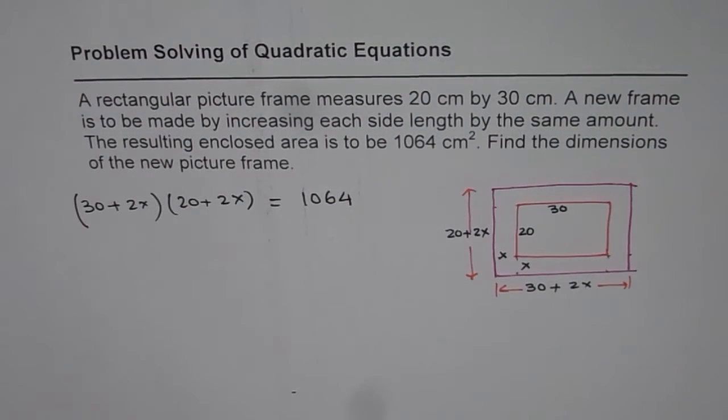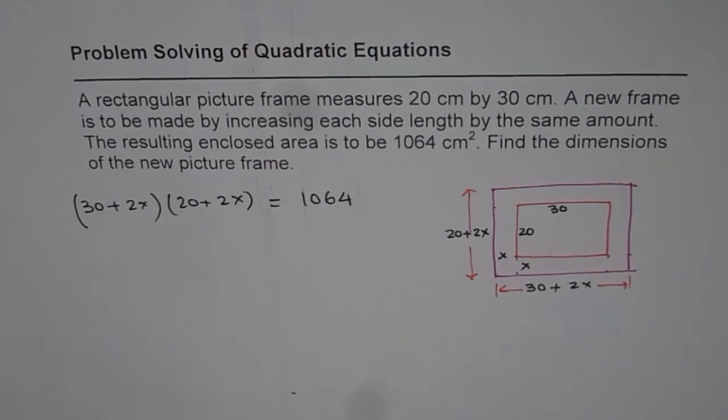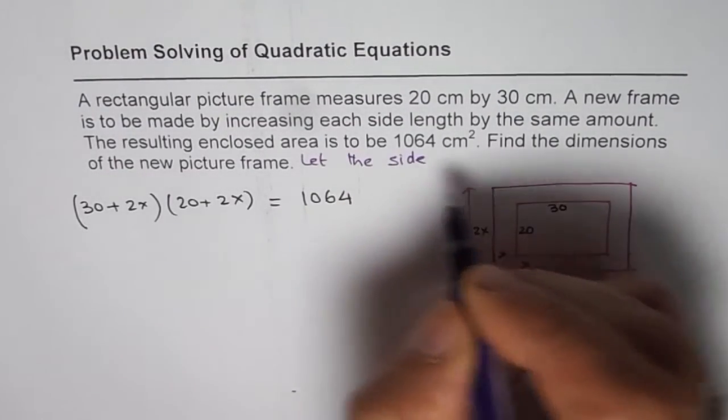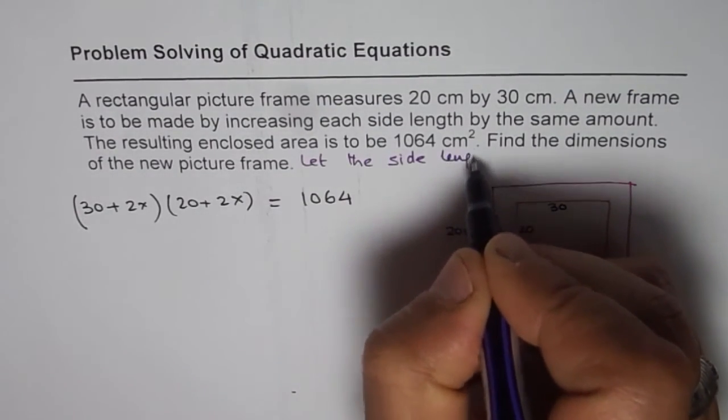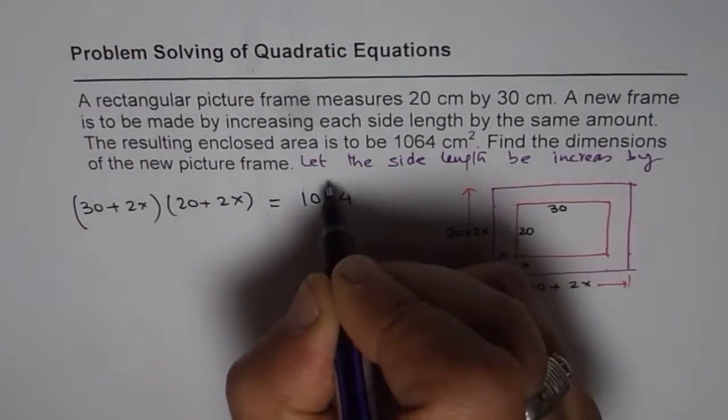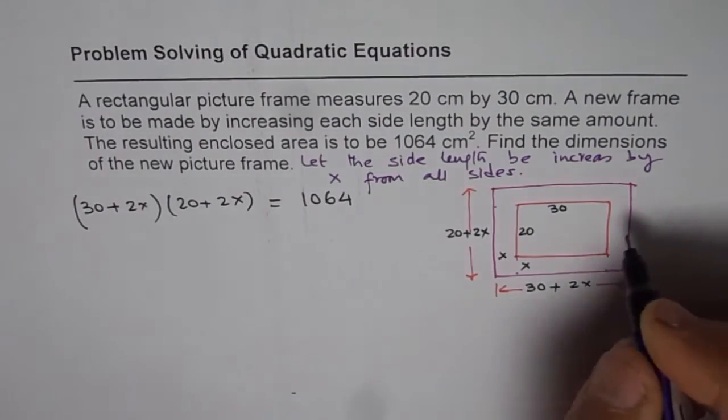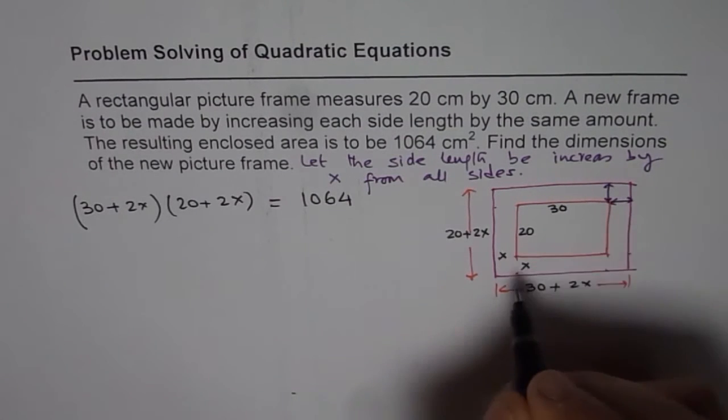So that is the equation for you. Now whenever you are solving such questions, my recommendation is you should write all the statements saying that let the width and the length be increased by x on each side. That is kind of important. So let me write down here: let the side length be increased by x from all sides. What I mean to say is I did x along the width and x along the length.